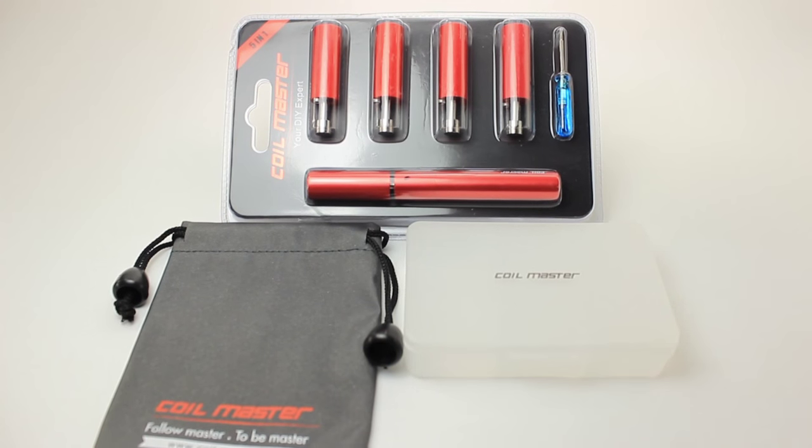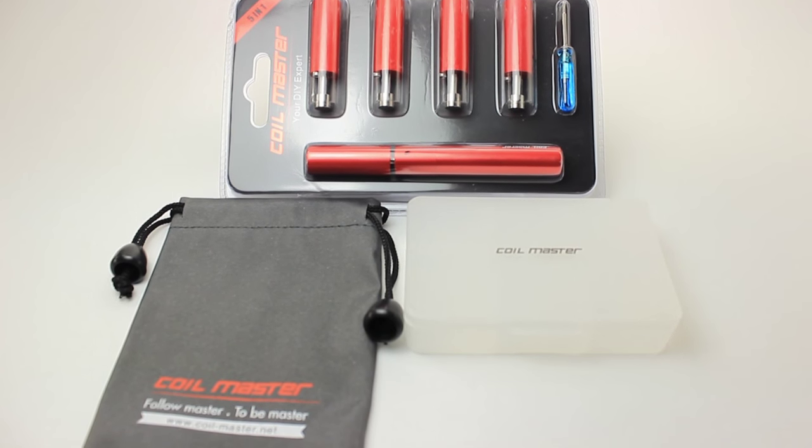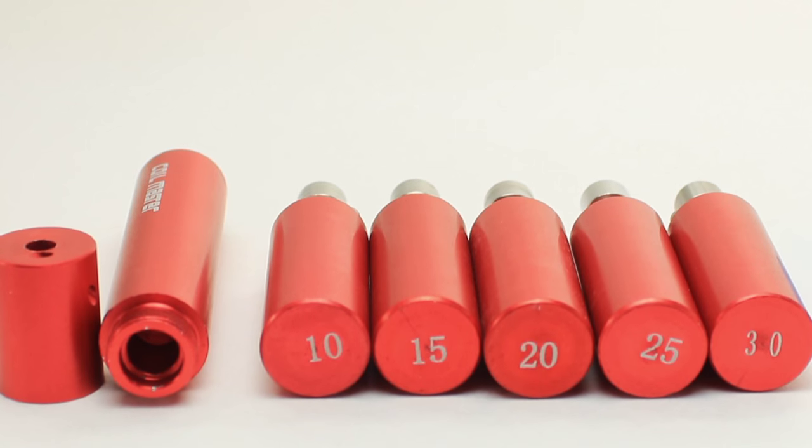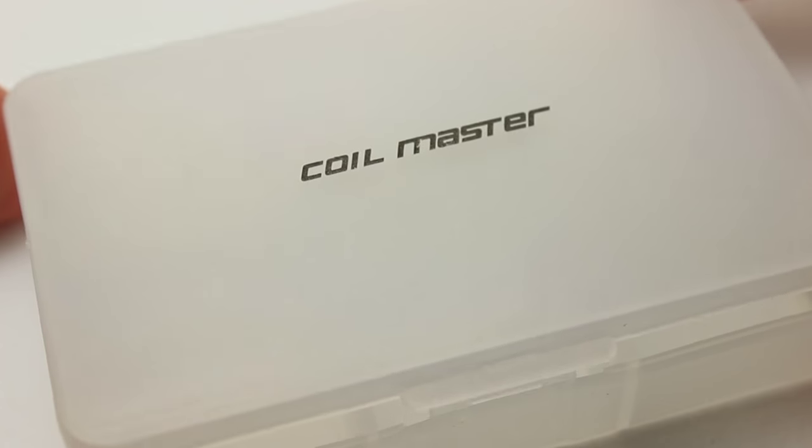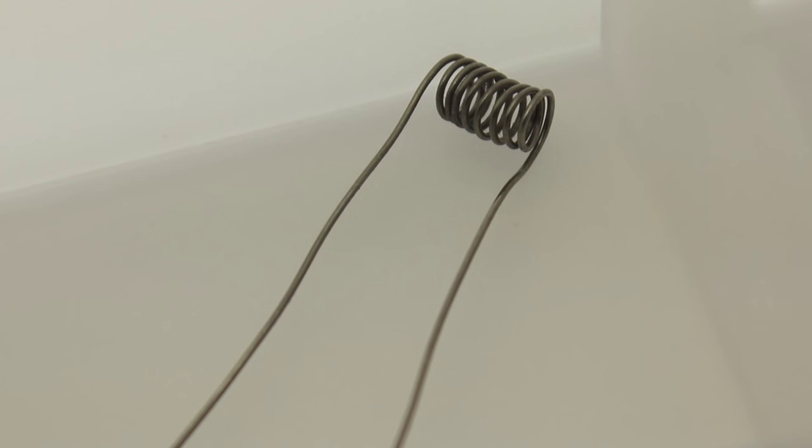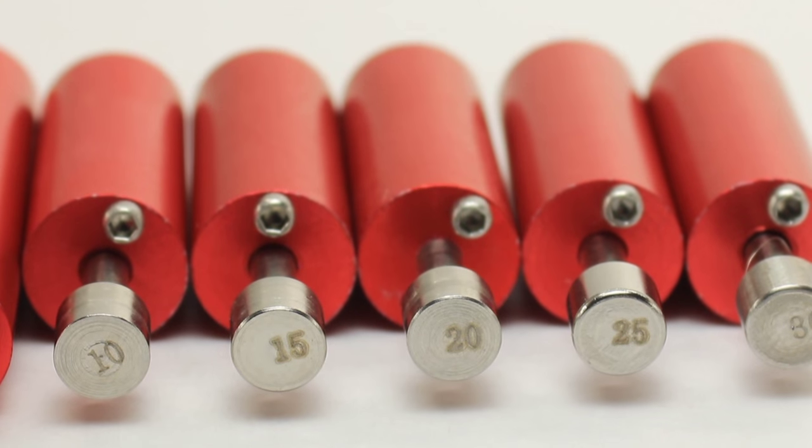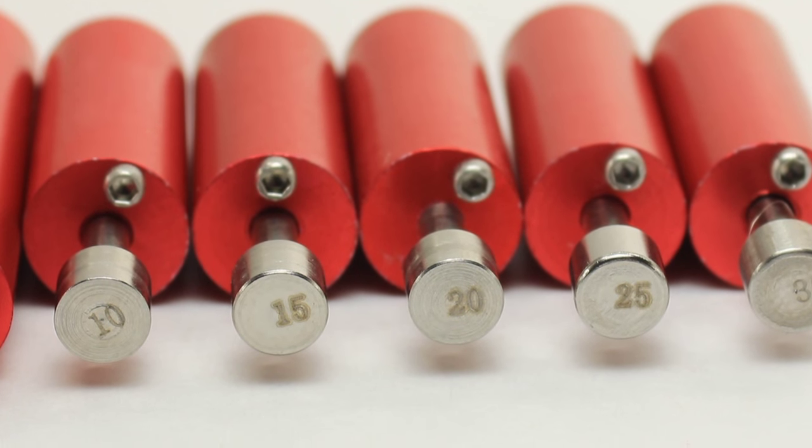The coil master five-in-one, also called version two, includes one base, five top covers, and five coiling poles. The size coils you can build are 1.0, 1.5, 2.0, 2.5, and 3.0 millimeters.